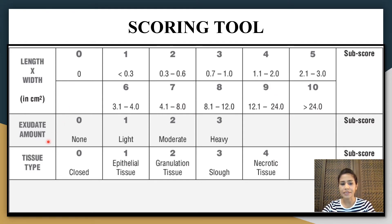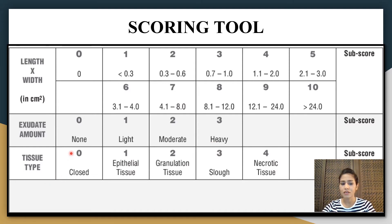The second parameter is exudate amount. If there is no exudate or drain, you give a score of 0. If there is light exudate, the score is 1. If it is moderate, the score is 2. And if it is heavy, the score is 3. The last parameter is tissue type. If the wound is closed, give a score of 0. If you note epithelialization, give a score of 1. If there is granulation tissue, give a score of 2. If slough tissue is noted, give a score of 3. And if it is necrotic tissue, the score should be 4.